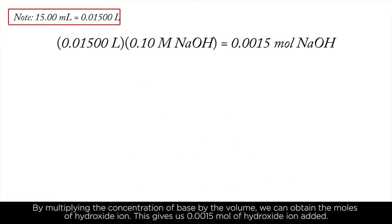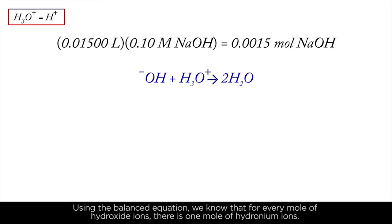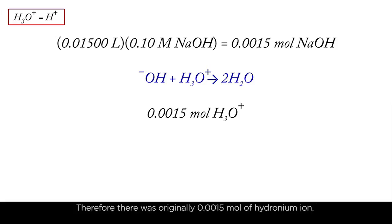By multiplying the concentration of base by the volume, we can obtain the moles of hydroxide ion. This gives us 0.0015 mole of hydroxide ion added. Using the balanced equation, we know that for every mole of hydroxide ions there is one mole of hydronium ions. Therefore, there was originally 0.0015 moles of hydronium ion.